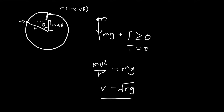When the string is cut, the particle flies off in the direction of the tangent to the circle at angle theta. Since the tangent to a circle is always 90 degrees to the radius, and doing a bit of geometry — this angle is theta, this is 90 degrees, this is 90 minus theta — the flight direction makes an angle theta with the horizontal. We can now break this speed into horizontal and vertical components.